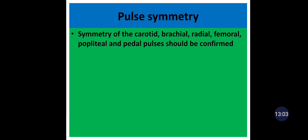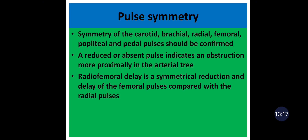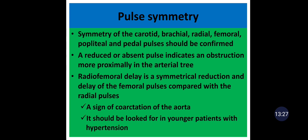Pulse symmetry: symmetry of the carotid, brachial, radial, femoral, popliteal, and pedal pulses should be confirmed. A reduced or absent pulse indicates obstruction more proximally in the artery. Radiofemoral delay is a symmetrical reduction and delay of the femoral pulses compared to the radial pulses, and it is a sign of coarctation of the aorta. Coarctation of the aorta should be suspected in younger patients with hypertension.